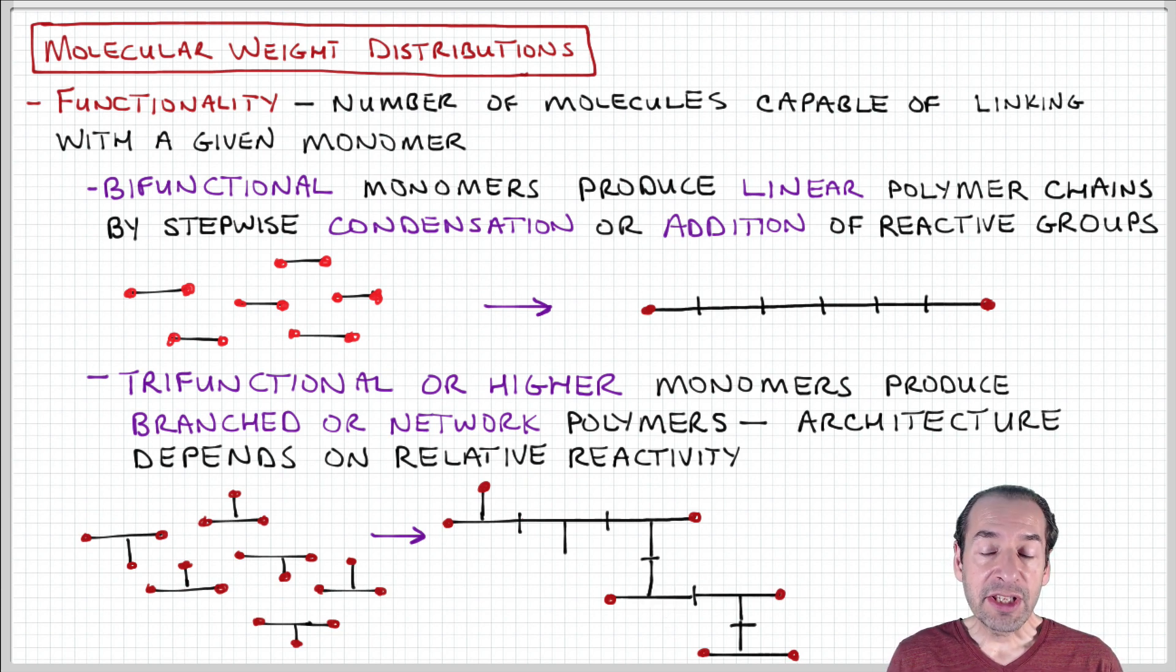You can imagine that the relative reactivity of these active sites will play a role in determining the properties of the polymer that's produced. For example, if the side group has a lower reactivity, then there's more likely to be a reaction to answer primarily linear polymers with a light degree of cross-linking or branching between them.